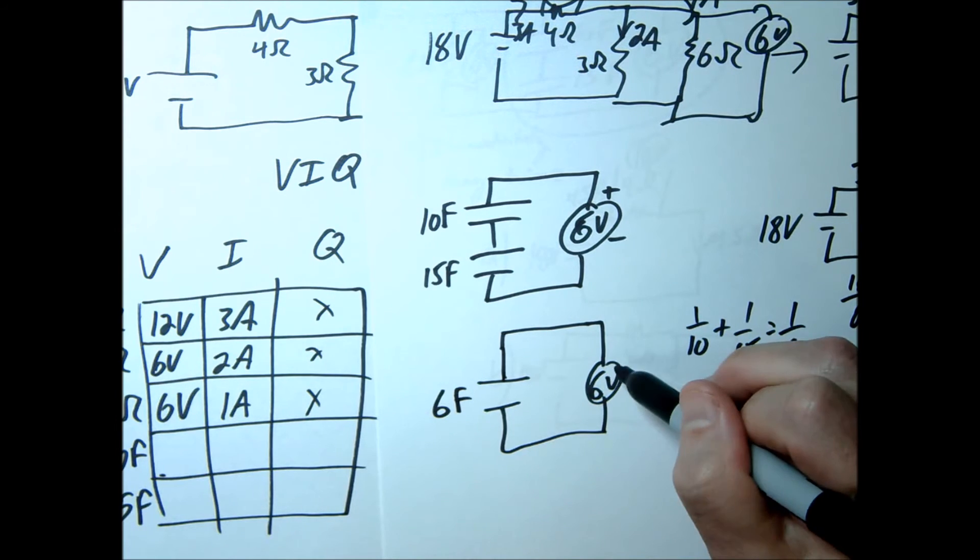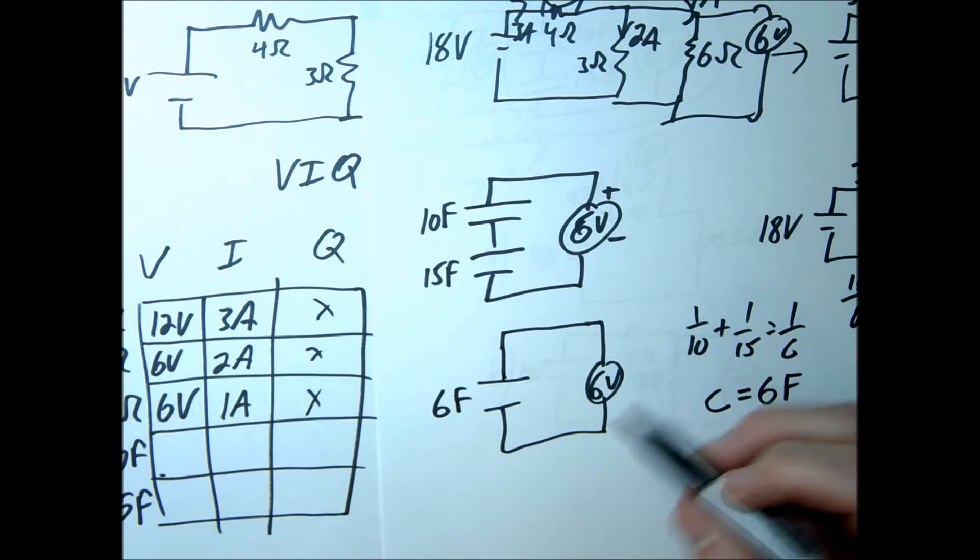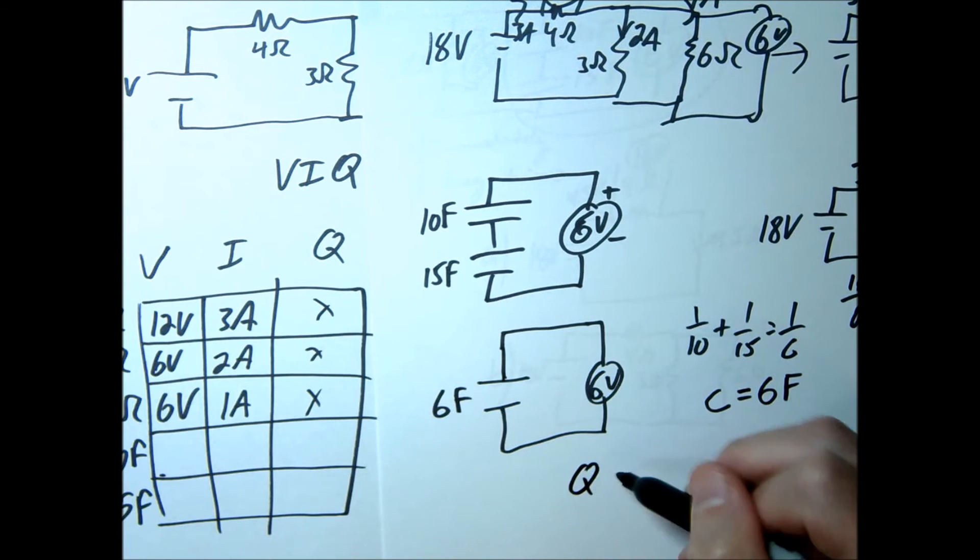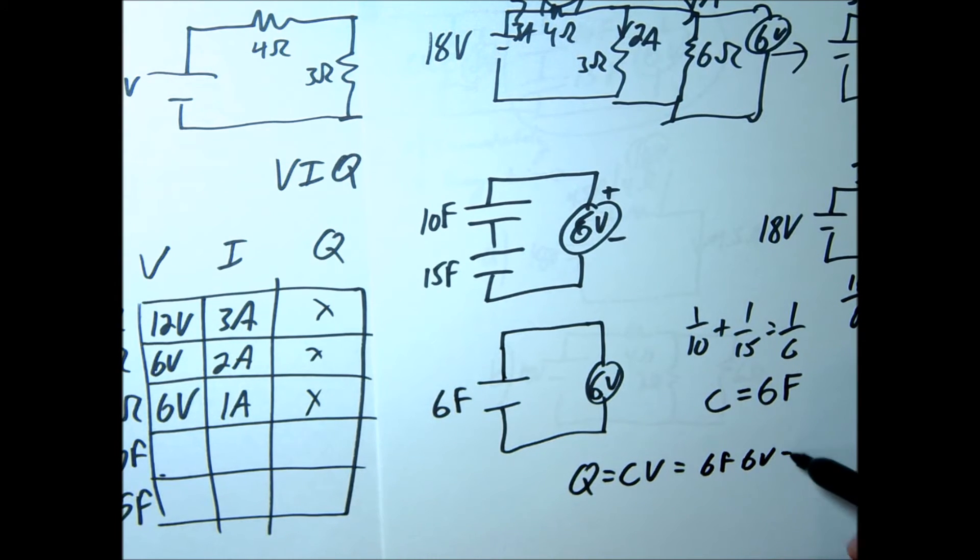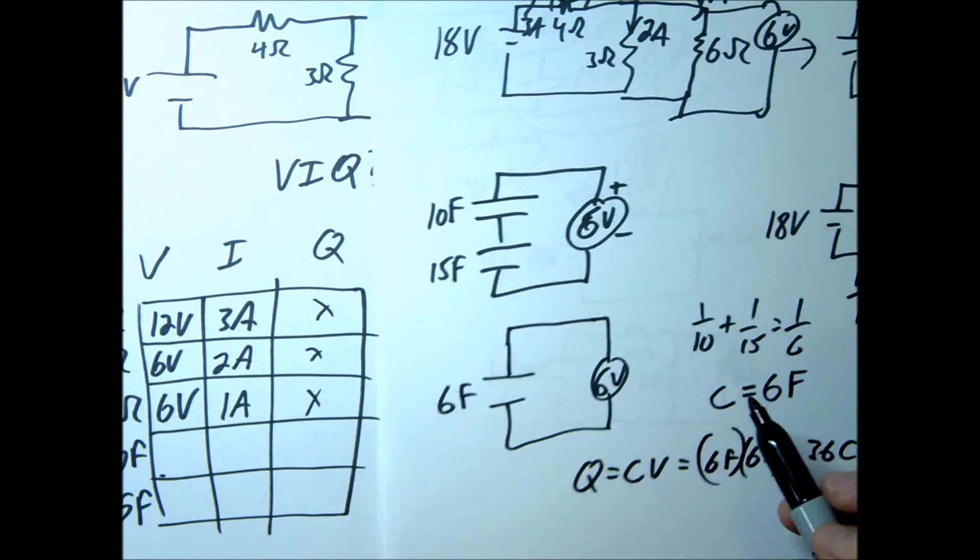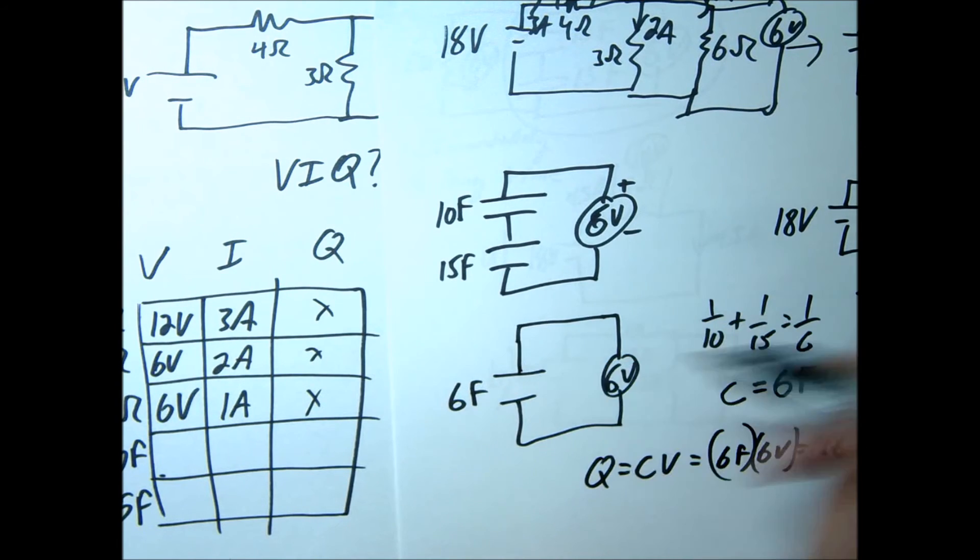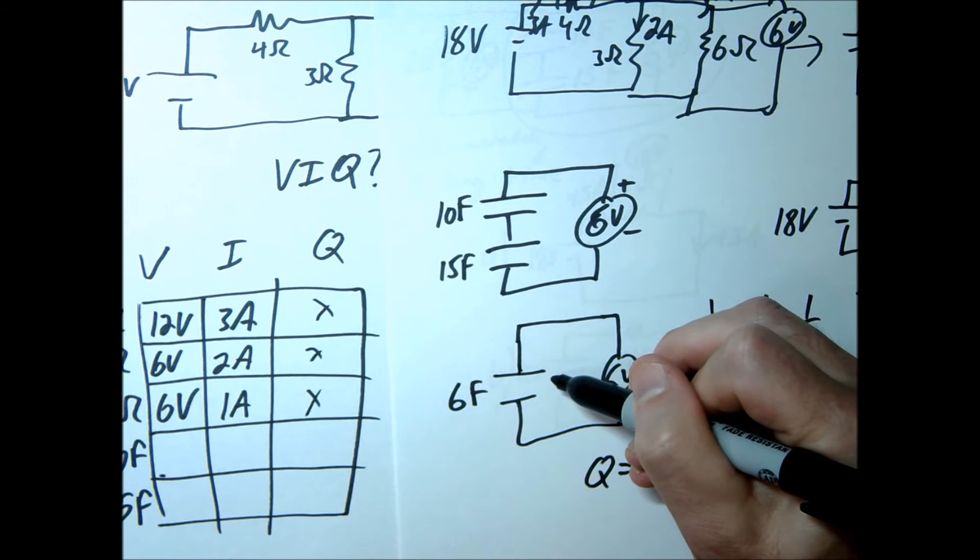And then what we'll do is say, okay, let's find the charge across that. So we're going to go Q equals C times V, so it's going to be 6 times 6. 6 farads times 6 volts equals 36 coulombs. So the charge across this is going to be 36 coulombs.